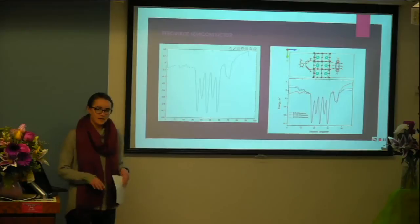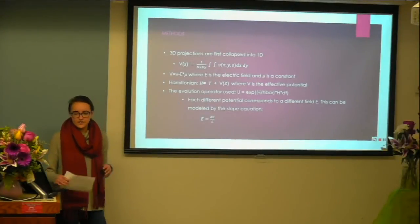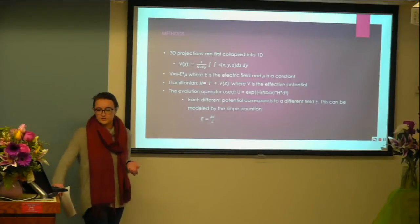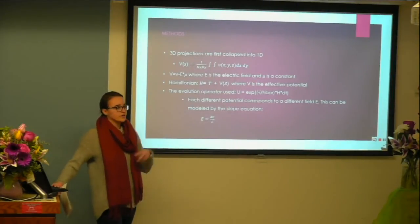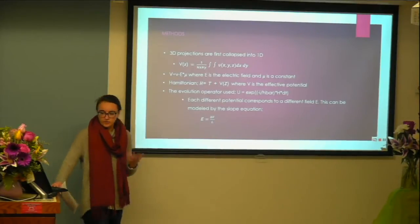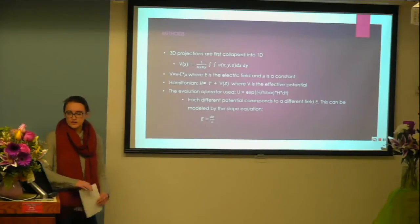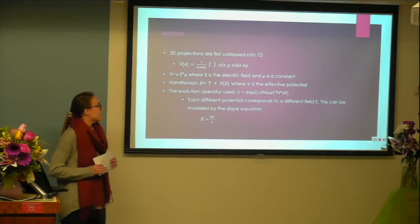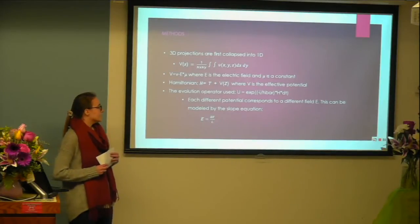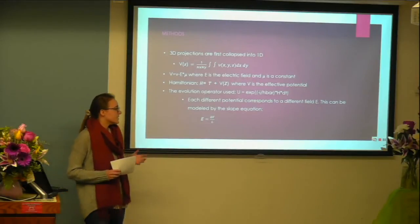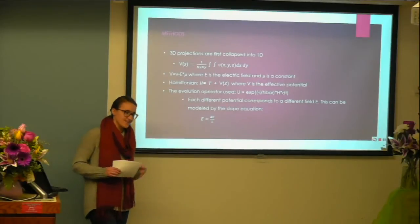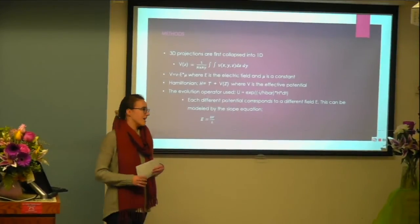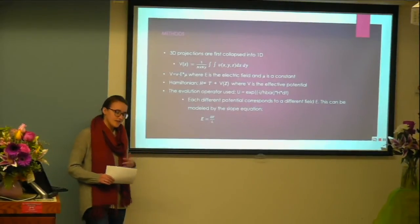In order to get that 3D image into a one-dimensional projection, we had to collapse our three-dimensional potential into a one-dimensional potential. To do this, you apply a double integral to remove the two dimensions we're not going to be using, and then we have a normalization factor. Our potential is described with a relationship to our electric field — that capital E — which is our main variable, where mu is just a constant. Our Hamiltonian is used to calculate our evolution operator, and that Hamiltonian is also dependent on our potential.